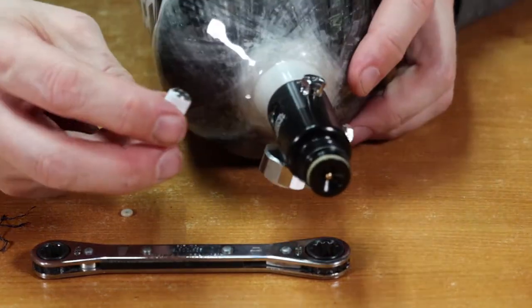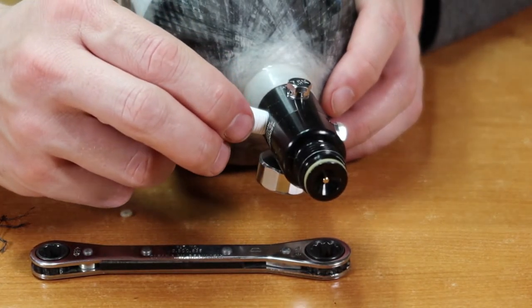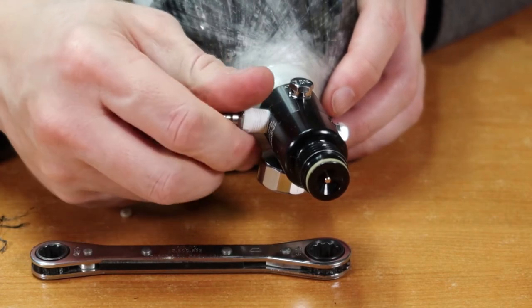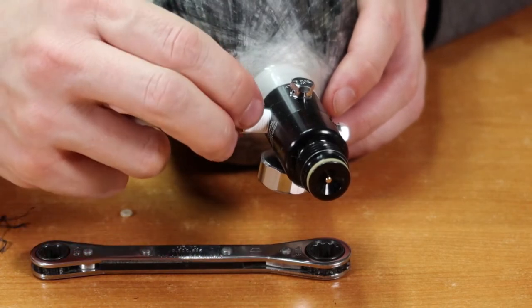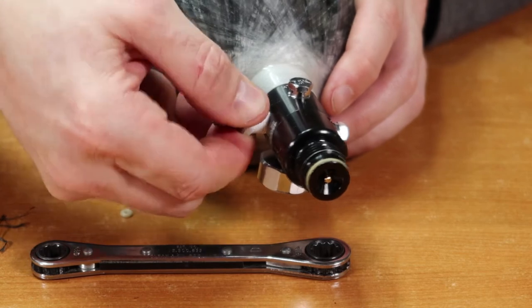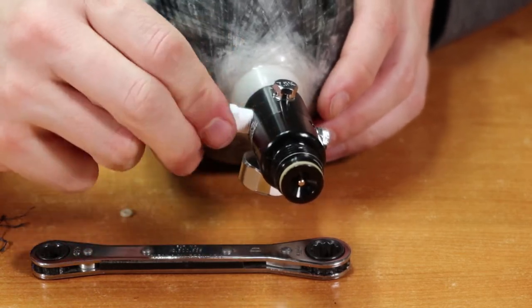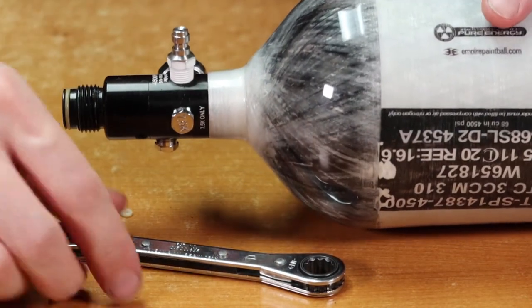And then we're going to screw it in to the regulator. Do it slowly and carefully. Always start it by hand. You don't want to cross thread this. If you cross thread it, you're going to end up buying a new regulator. So nice, as far as you can go in by hand. Get it in nice. You'll know it's nice and straight and good to go.